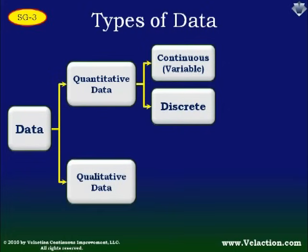Discrete data would be something like how many wheels are on the vehicle that you're looking at. Generally it'll be two for a motorcycle, three for a three-wheel ATV, four for a truck, six for a dual-axle. It's just a finite number of choices, and when you have that finite number of choices, it becomes discrete data.